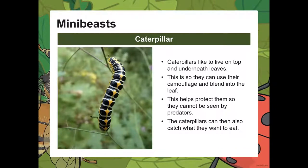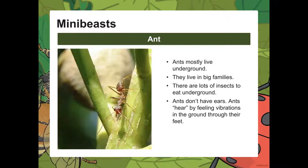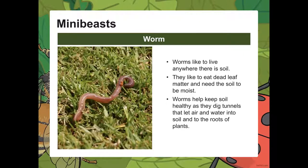Caterpillars like to live on top of and underneath leaves so they can use their camouflage to blend in, helping protect them from predators. Ants mostly live underground in big family groups. There are lots of insects to eat underground, and interestingly, ants don't have ears — they hear by feeling vibrations in the ground through their feet.